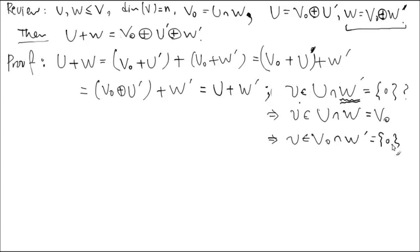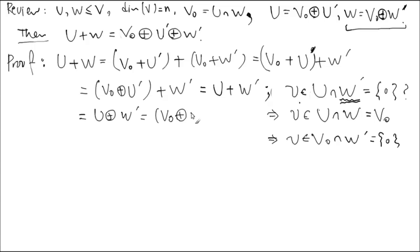By looking at containment, a simple logical statement gets you the zero vector. So what did I prove? u and w prime intersect trivially — anything in the intersection is the zero vector. Therefore u direct sum w prime, and u is already in direct sum form v0 ⊕ u prime. Therefore v0 ⊕ u prime ⊕ w prime is established. You can extend this idea carefully, one at a time, to three vector spaces, four vector spaces, and so on.